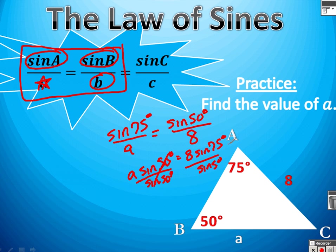Those go away, and I'm left with A equals, and this is what you would plug into your calculator: 8 times sine of 75, close your parenthesis, then divide by sine of 50 degrees. And I should get an answer of about 10.1 thereabouts, depending on where you round. Just like that.